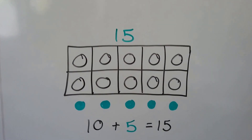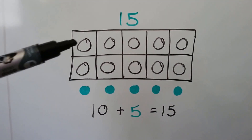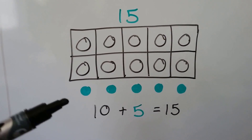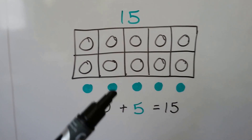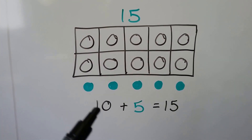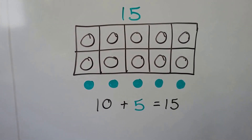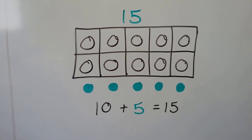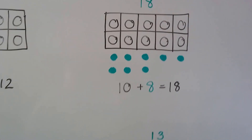If we needed a sum of 15, we could start with 10 and draw five more circles. We count: 10, 11, 12, 13, 14, 15. 10 plus 5 equals 15. We added five circles.